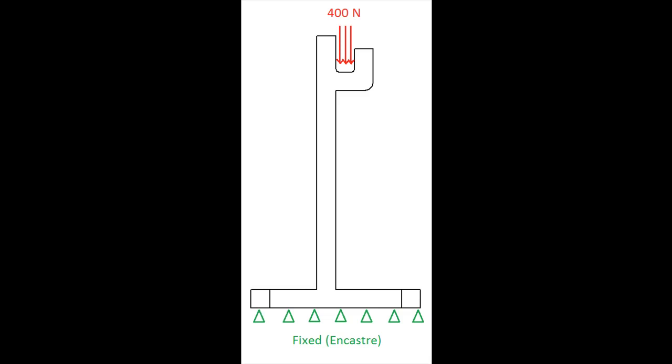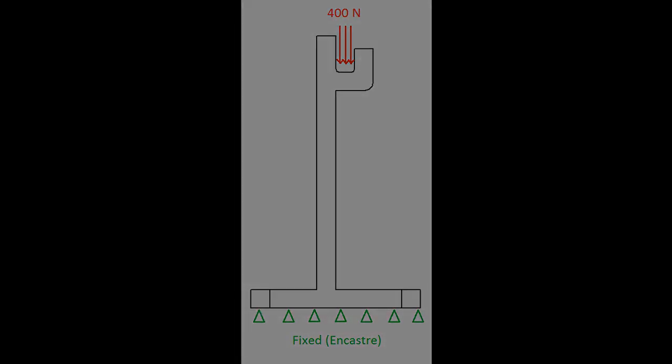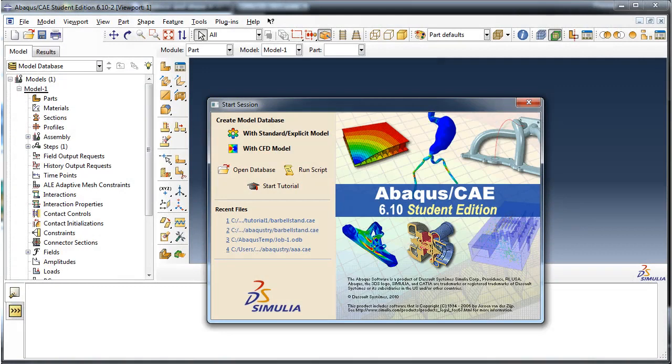The base of the barbell stand, which is normally in contact with the ground, will be fixed in space using an encastre boundary condition, meaning that it cannot translate along the x, y, or z axes, nor can it rotate about them. So let's go into Abaqus and give this a try.